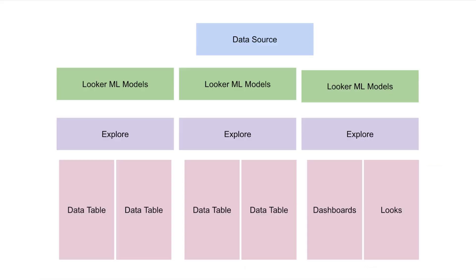In this diagram we can see the main components of Looker and how they fit together. At the top we have the data resources, which can be one or more databases, data warehouses, or other data stores. Below the data sources we have the LookML models, which are definitions of data and its relationships. LookML is Looker's modeling language that allows developers and admins to define data in a standard format that can be used by everyone in the organization.